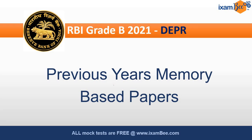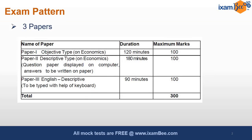Hello everyone, welcome to our exam preparation. We are discussing previous year's memory-based paper for DEPR RB Grade B exam. Your exam has three papers: Paper 1, which is objective type with economics questions of 100 marks; Paper 2 is descriptive type on economics; and Paper 3 is English, as in the RB Grade B general side.